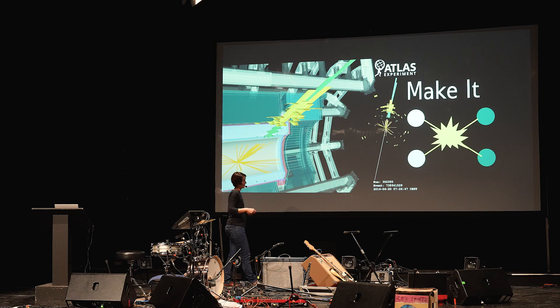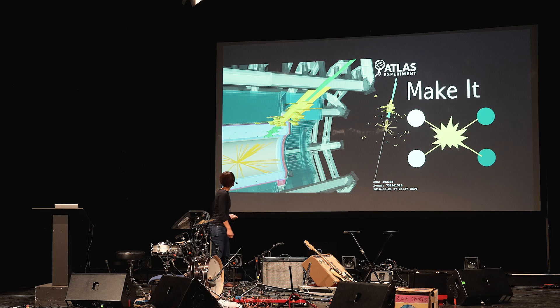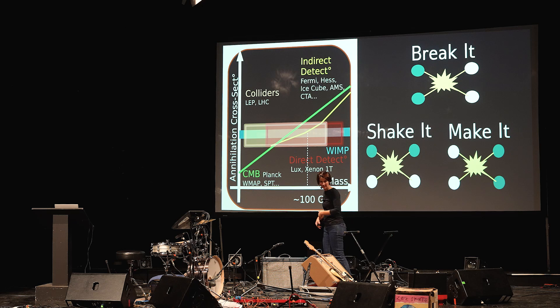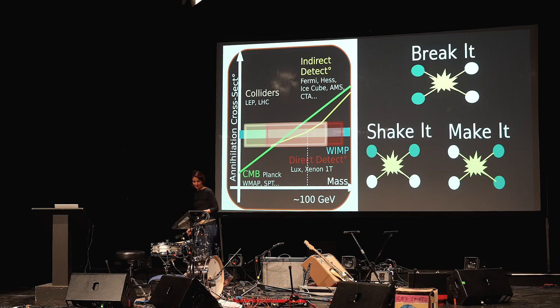Another way is to try to make dark matter. You have standard model particles, you crash them against each other, and you hope at some point to generate some dark matter particle. This is what people are testing in collider experiments like the Large Hadron Collider at CERN — again, they have not seen anything. So putting together these break it, shake it, make it processes, we typically get to a certain region of parameter space that is just now excluded. We don't know what dark matter is, but we already know a lot of what dark matter cannot be. We have no conclusive evidence for dark matter yet.